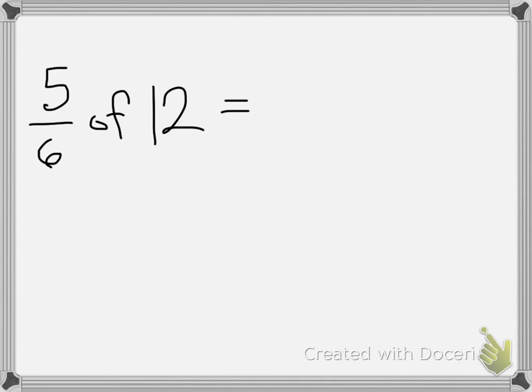In this problem we have 5/6 of 12. Anytime you hear the keyword 'of,' you're going to be doing multiplication. That's the keyword—you're going to multiply.